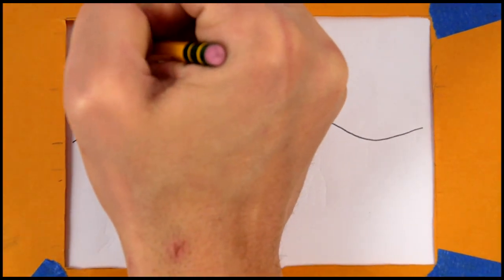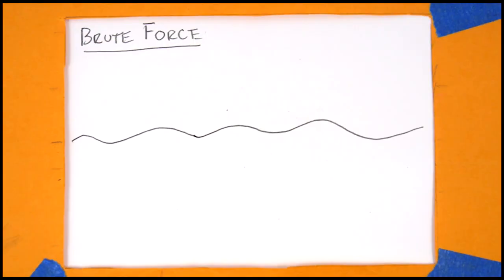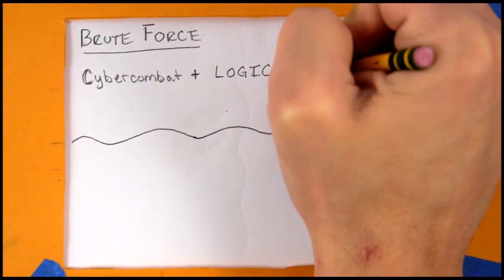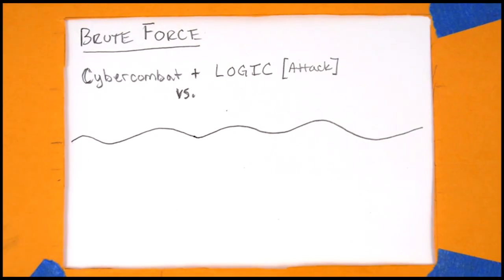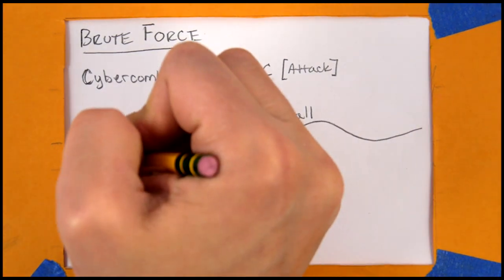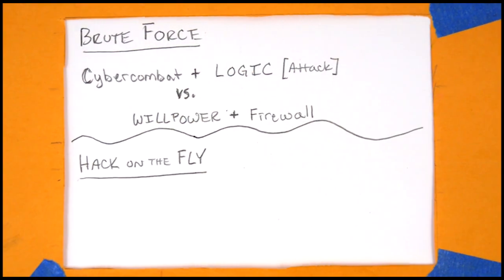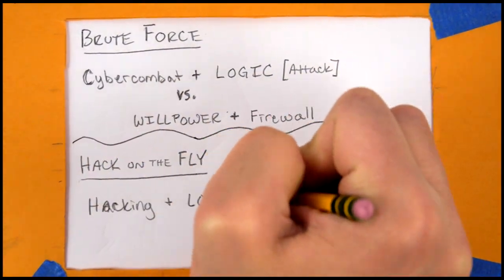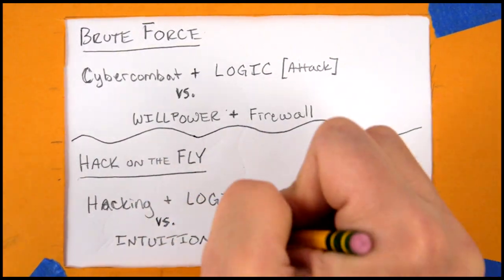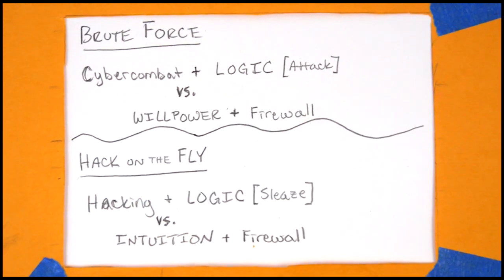Brute force is an attack action, which means that the limit for the test relies on the attack attribute of the device being used to hack. The test is cyber combat plus logic versus the target's willpower plus firewall. Hack on the fly, however, is a sleaze action. The test is hacking plus logic versus the target's intuition plus firewall. Hack on the fly uses the sleaze attribute as the test's limit.